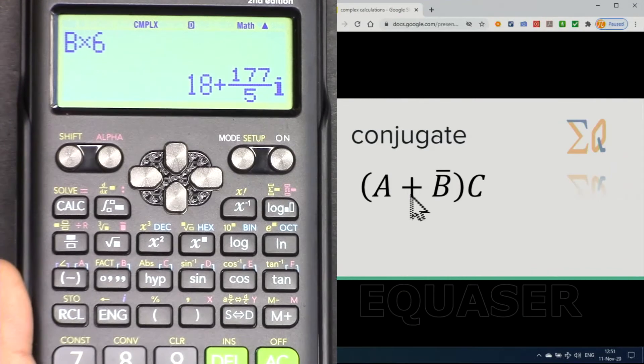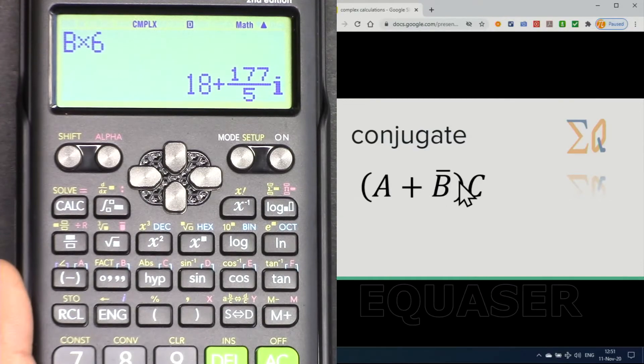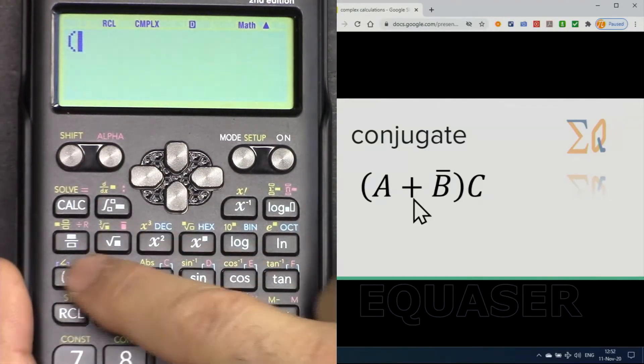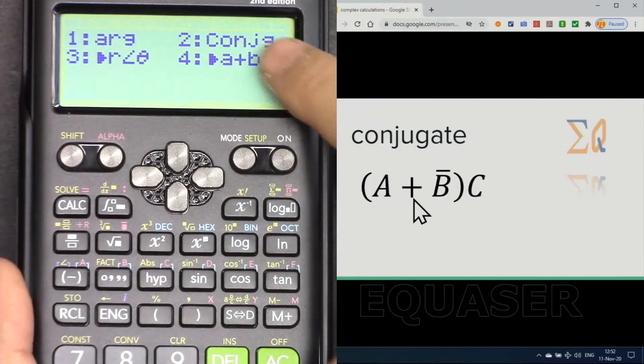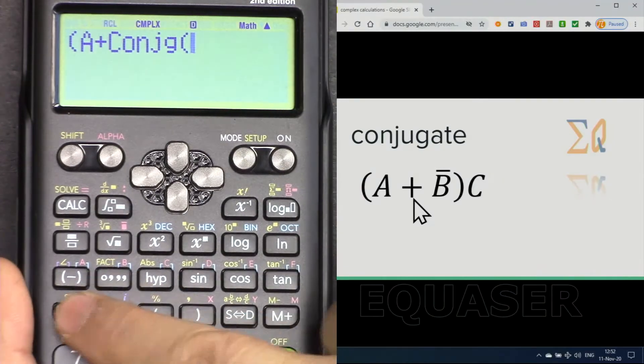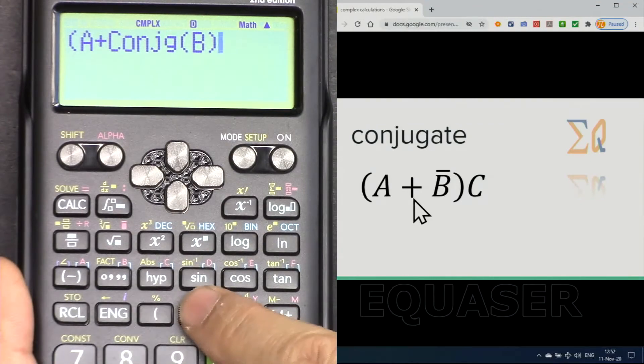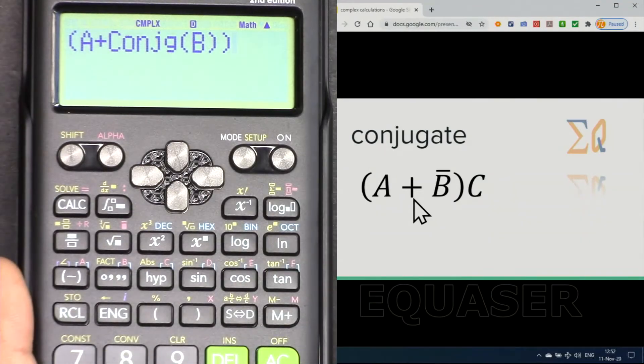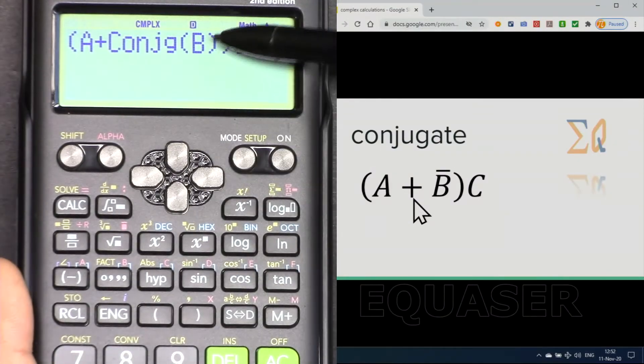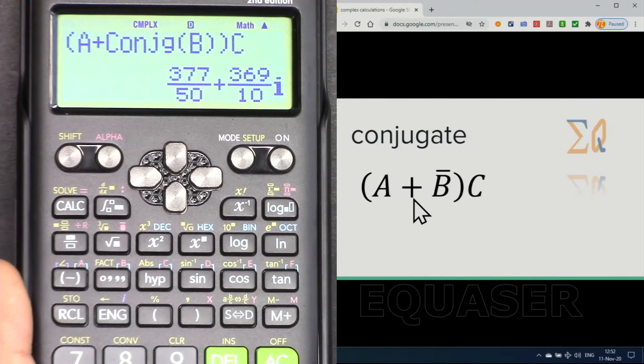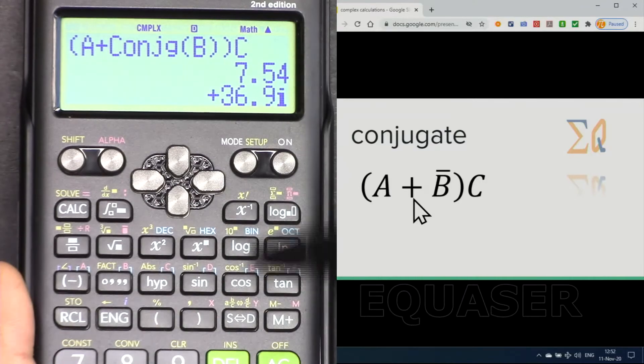If you need the conjugate, here is how you do it. For example, A plus conjugate of B times C. Bring recall A, plus conjugate. Press shift, complex, conjugate is 2. Recall B, close it, and then close that parenthesis. Then recall C. What it means is A plus conjugate of B multiply by C. Press equal sign and that's the value. If you want it in decimal format, just press this button and it will be in decimal format.